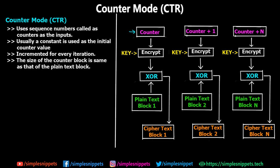The size of the counter block is the same as that of the plaintext block. So if the block size is fixed at 64 bits, the counter string will also be 64 bits. The key is also going to be 64 bits — once the size of the key is selected, the block size is then fixed according to that key, though it might differ in some cases.